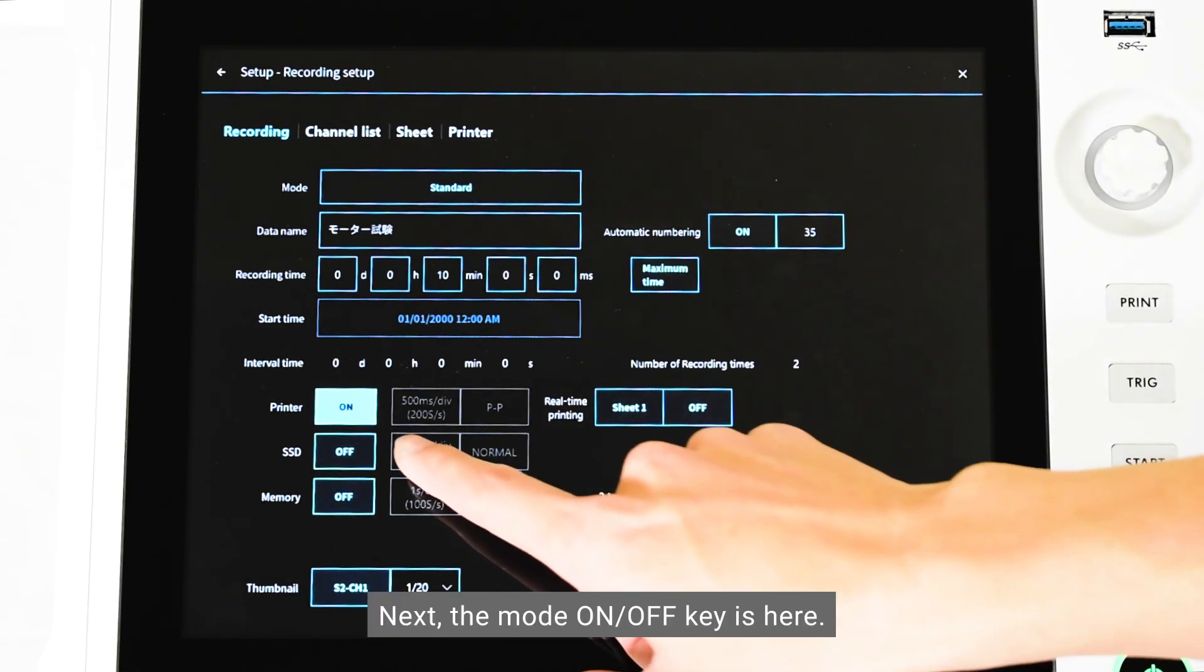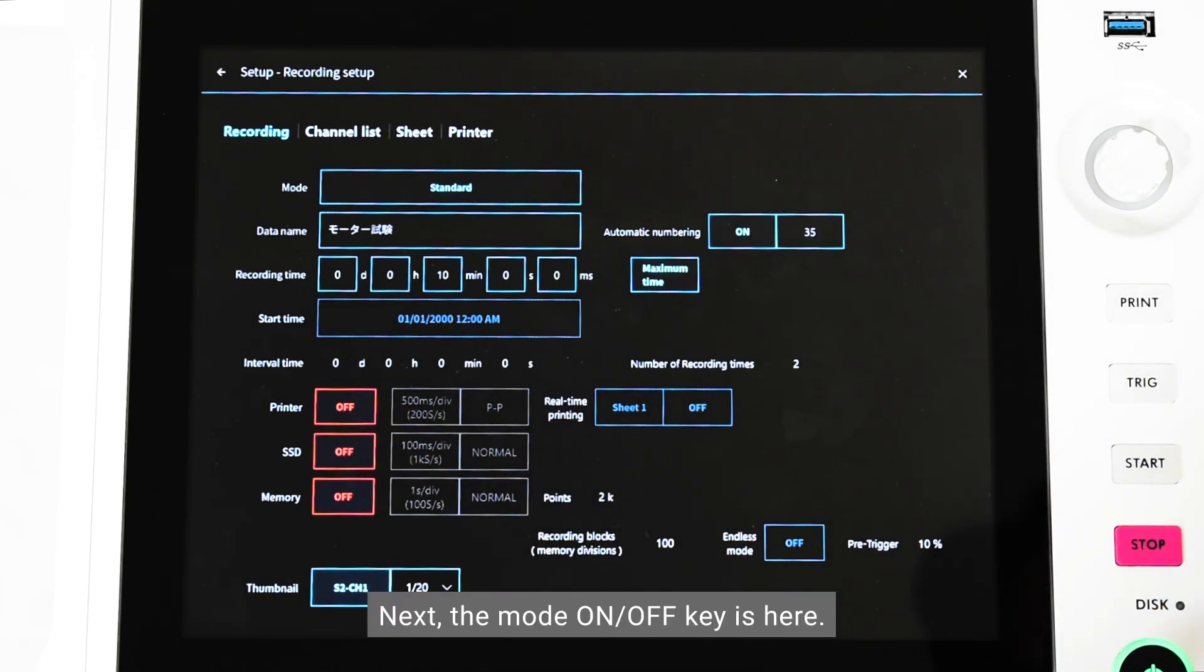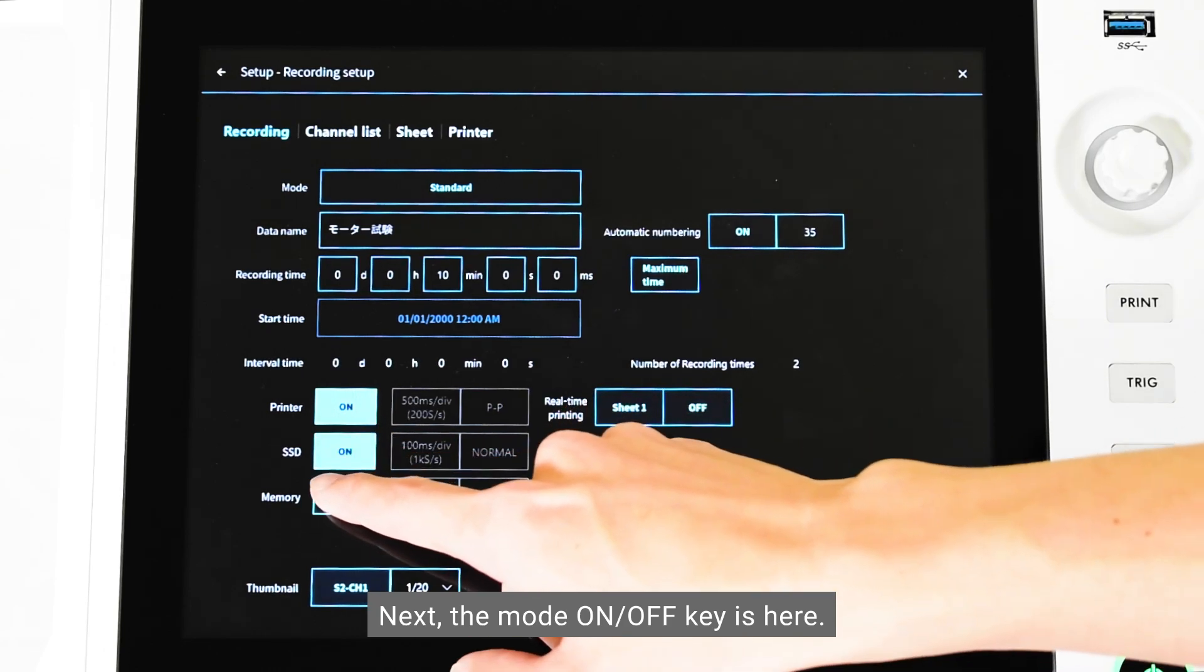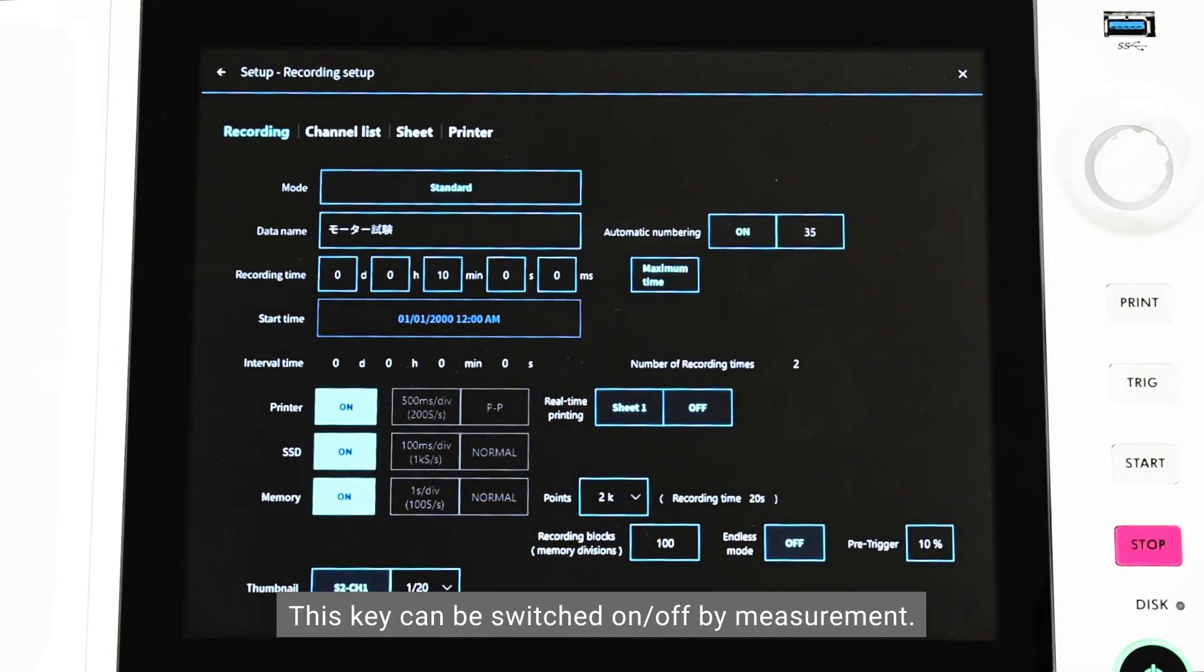Next, the mode on/off key is here. This key can be switched on/off by measurement.